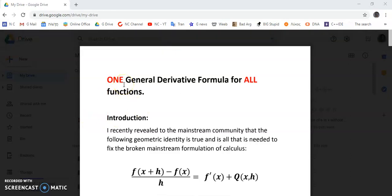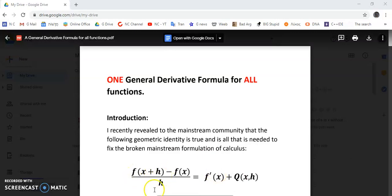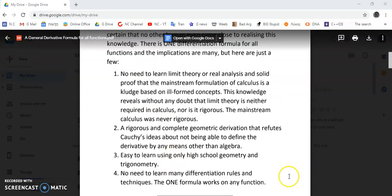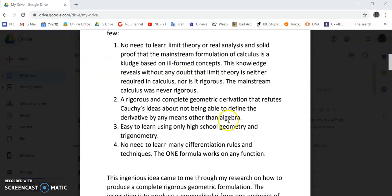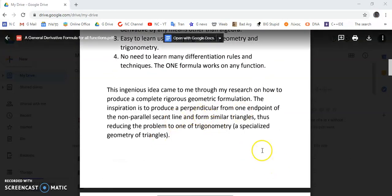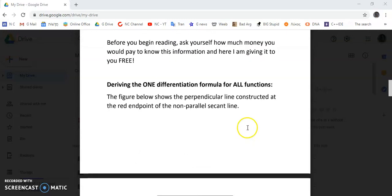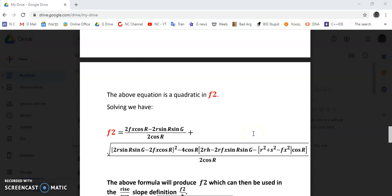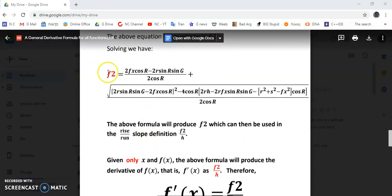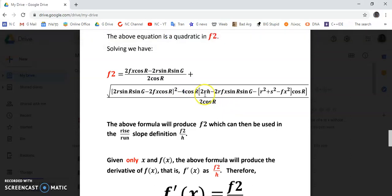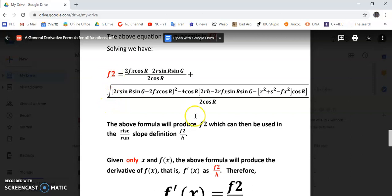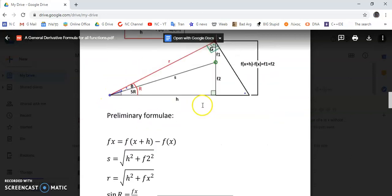...about fixing your broken mainstream calculus using this geometric identity. I'll explain to you why it's so important. There's one formula and you can calculate the derivative at any point for any function given only the value of x and the function itself. This here is the beautiful formula that you obtain and it's valid for any function.